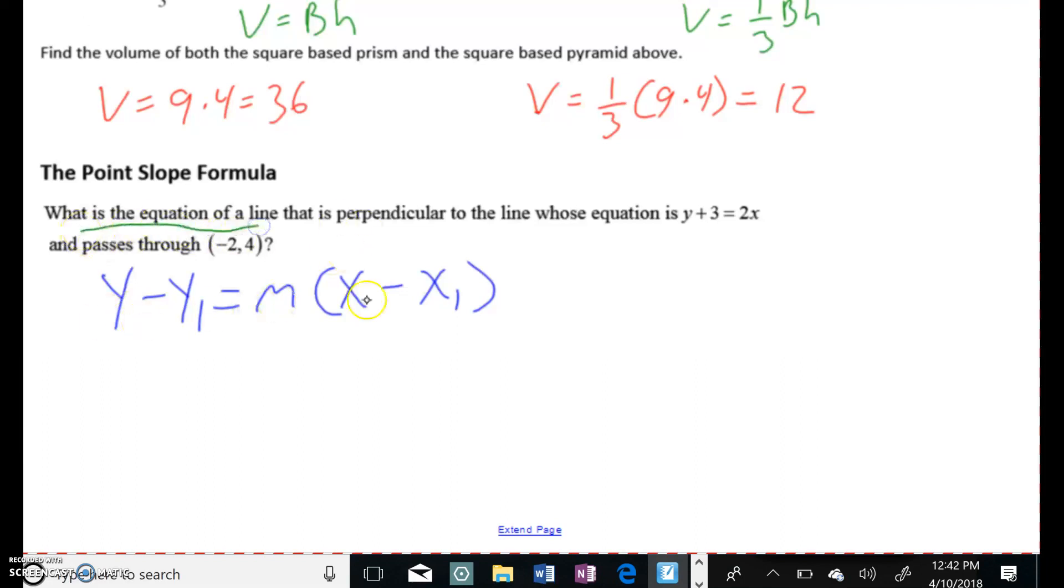It's going to be Y minus a Y value. They tell you it passes through the point. So this is what I'm using as my X₁, Y₁. My Y value is 4. My M, I'll get to in a minute. But X minus the X value, so minus a negative 2. And that minus negative is going to end up being plus 2. But what is the slope of this line?